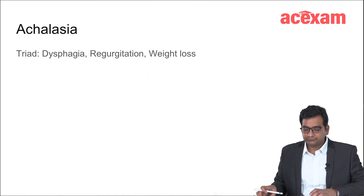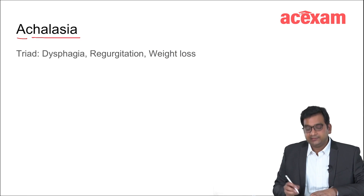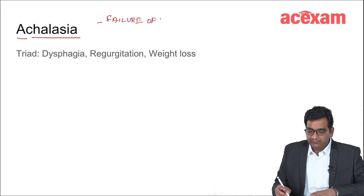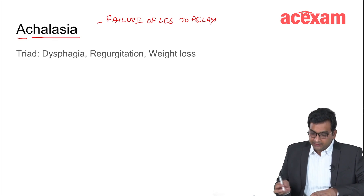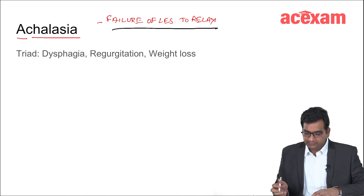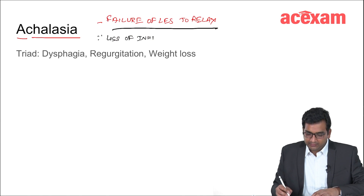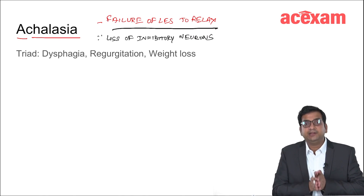Coming on to achalasia — this is failure of the lower esophageal sphincter to relax, which leads to achalasia cardia. Why is there failure of LES to relax? Because of the loss of inhibitory neurons. Due to the loss of inhibitory neurons, there is only contraction of the lower esophageal sphincter.